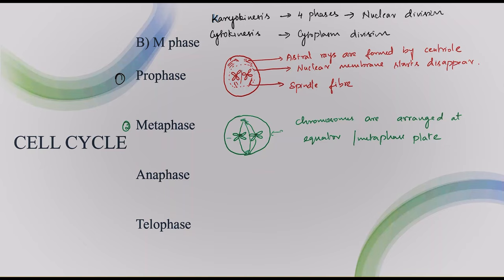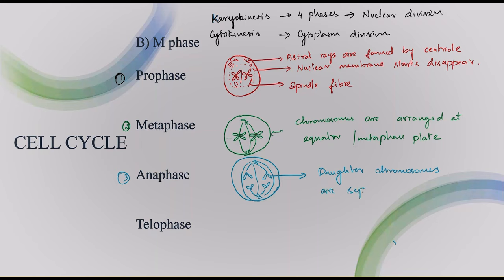Now let us see the anaphase. In anaphase, the two sister chromatids are separated. Daughter chromosomes are separated, and with the help of the centrioles, they are pushed to the opposite poles. Finally the two sister chromatids are separated.